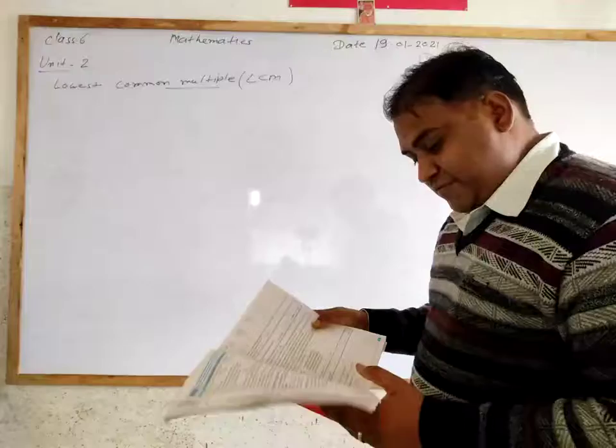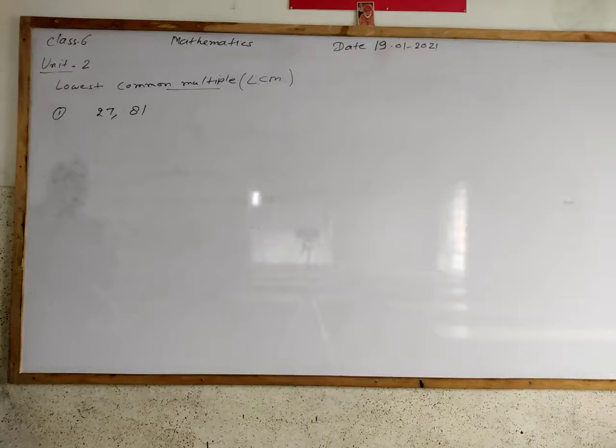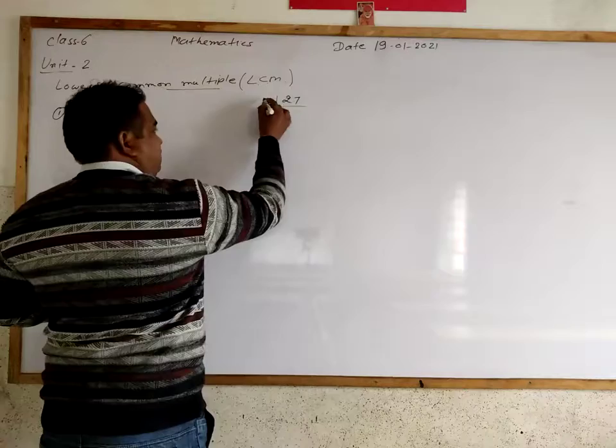I will explain it by taking one example. The example is LCM of 27 and 81. First of all we will find out factors of 27 and 81. So we will find prime factorization of 27.